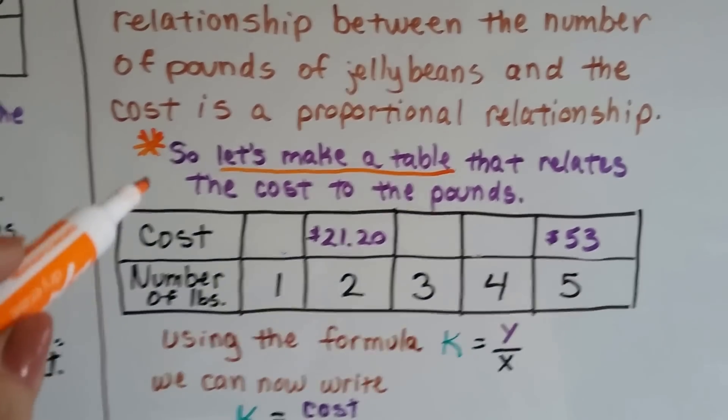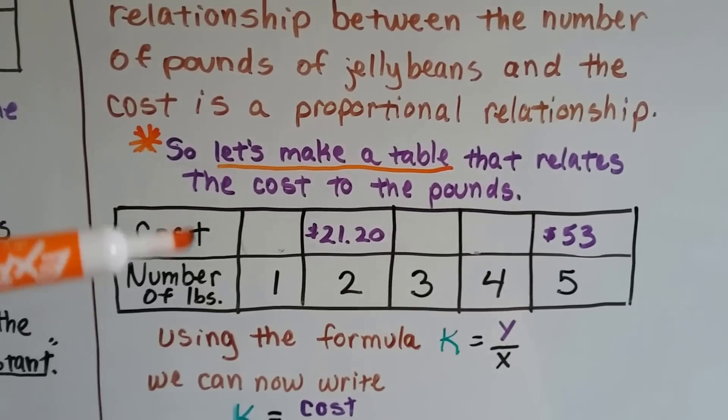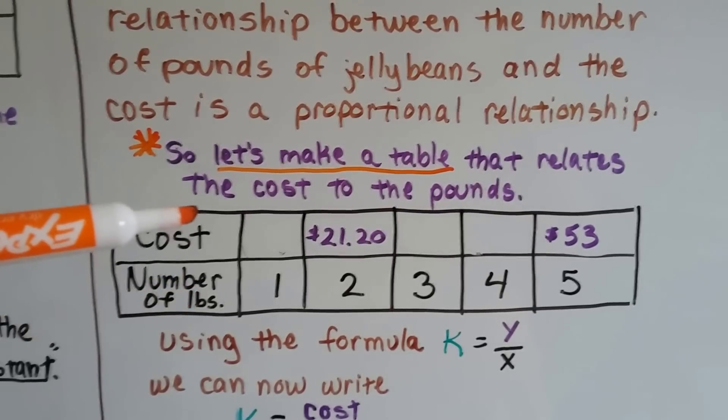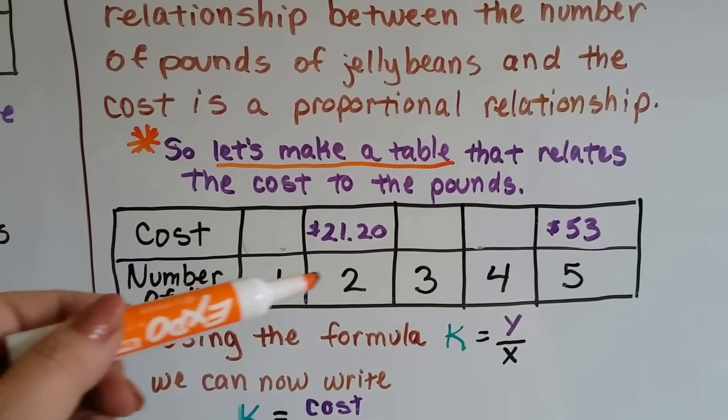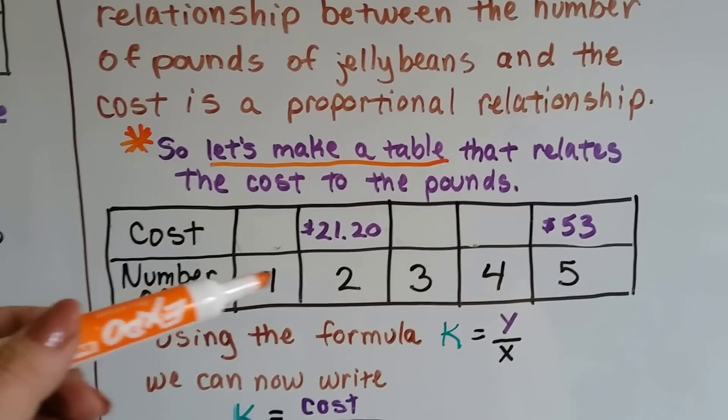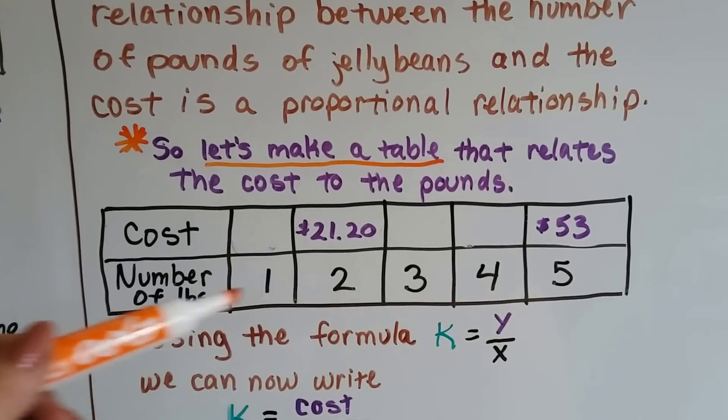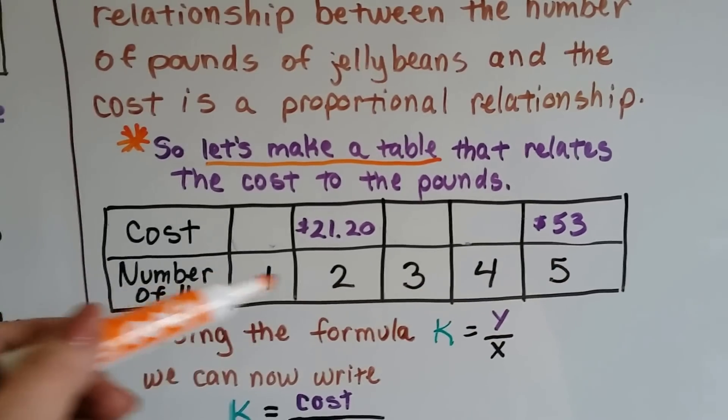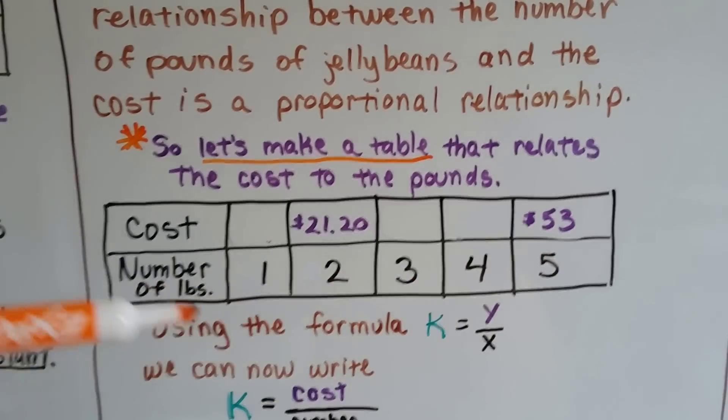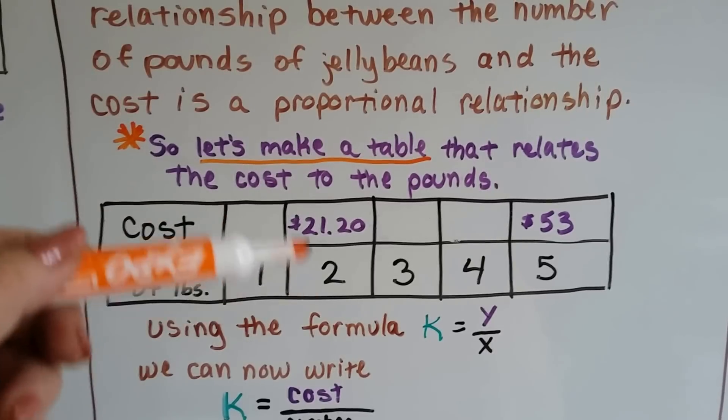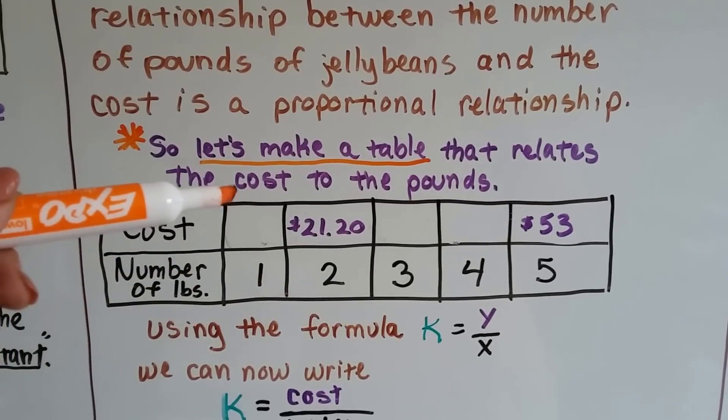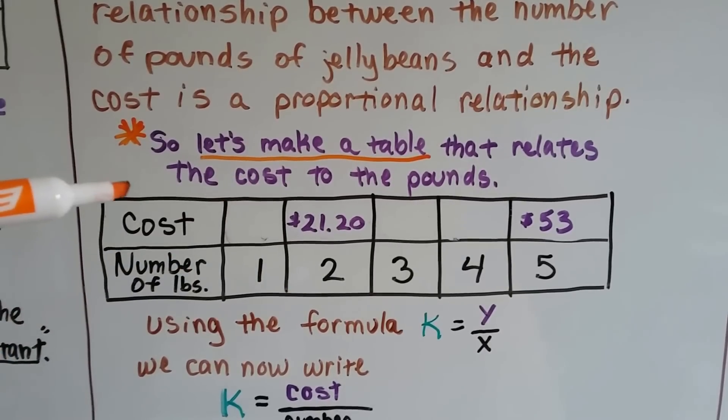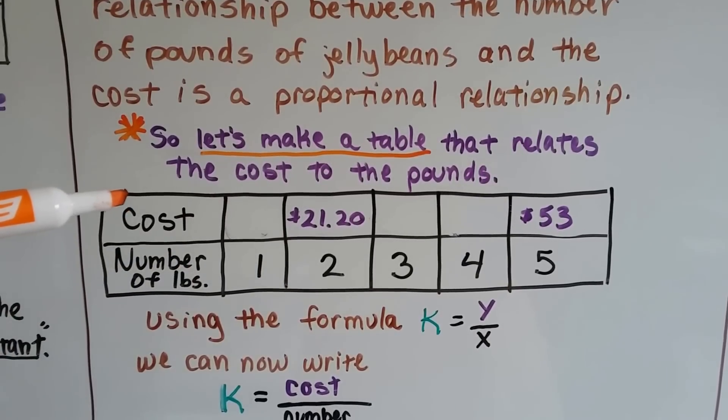Just make this little table, and you put the number of pounds on the bottom and the cost on the top. Whatever the number that is changing constantly one by one, or two by two, or three by three, put that at the bottom as the denominator. And then whatever is the larger number, put that as the top. In this case, it's the cost.